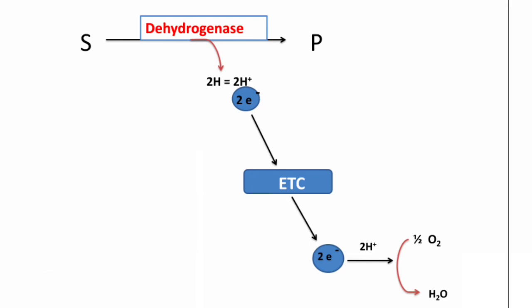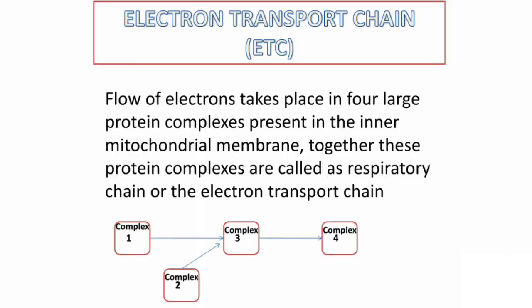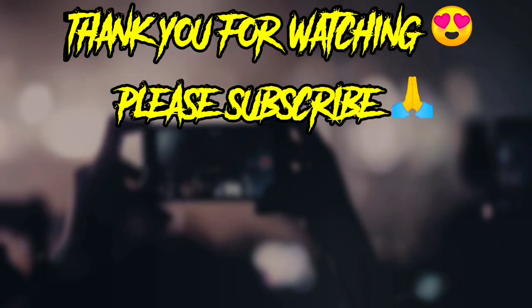During the transfer of electrons, the electrons lose energy and finally combine with oxygen to form water. The flow of electrons takes place in four large protein complexes present in the inner mitochondrial membrane. Together, these protein complexes are called the respiratory chain or electron transport chain.